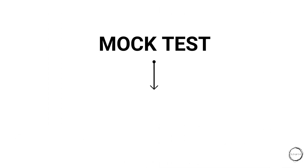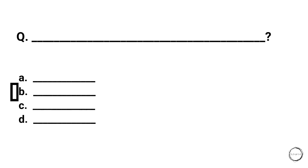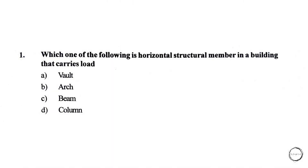Hi guys, welcome back. Today we are looking into another MCQ type video. In this you will have four options with one correct answer. First question: which one of the following is a horizontal structural member in a building that carries load? A) vault, B) arch, C) beam, D) column. The right answer is C, beam.